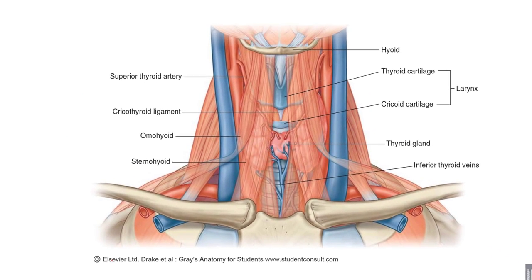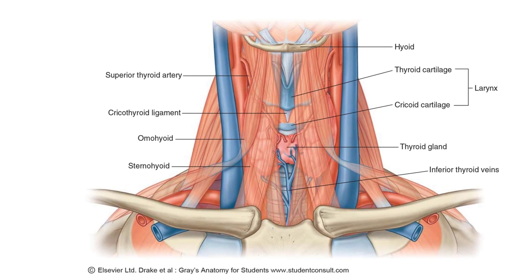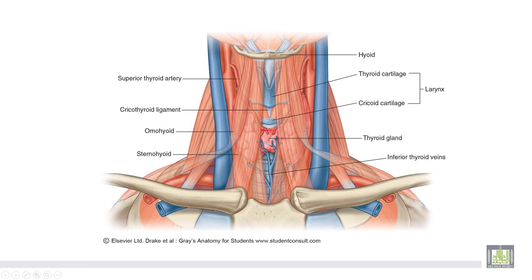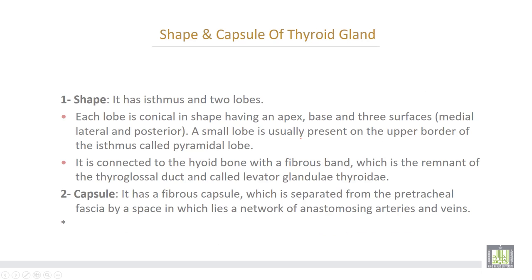This is the thyroid gland. The isthmus lies opposite the second, third, and fourth tracheal rings. These are the two lobes covered by infrahyoid muscles.